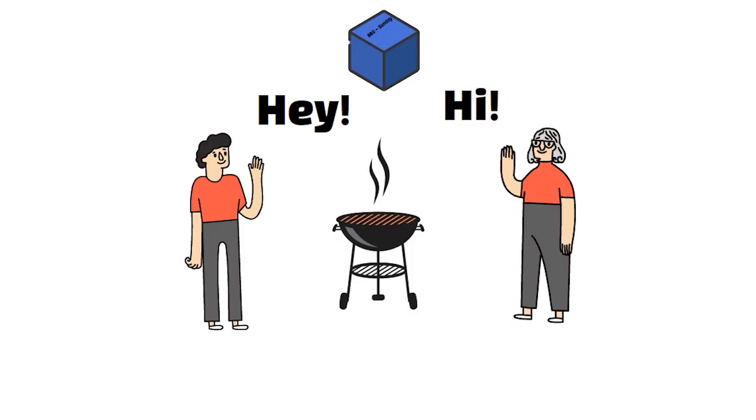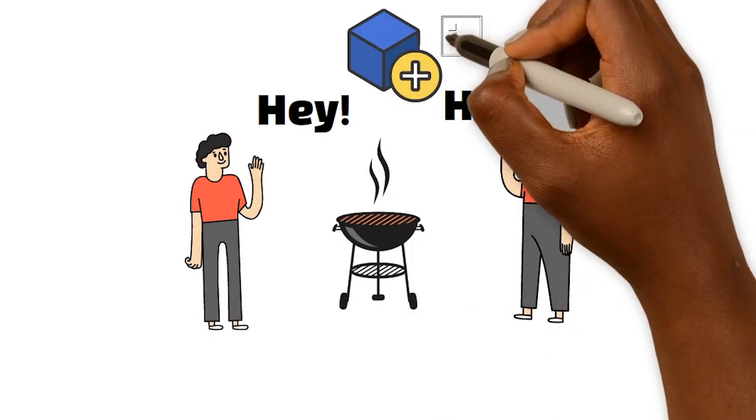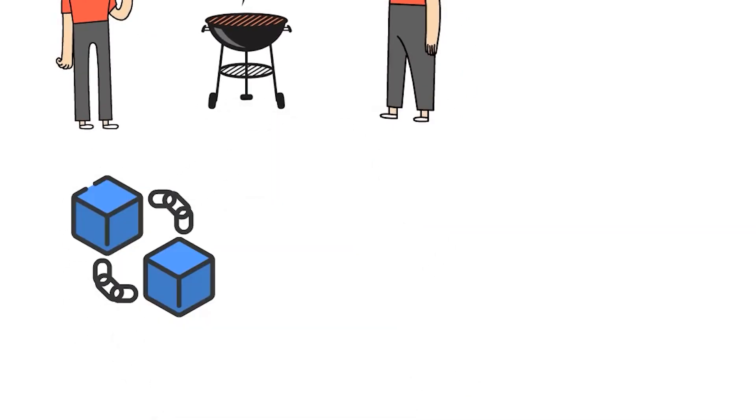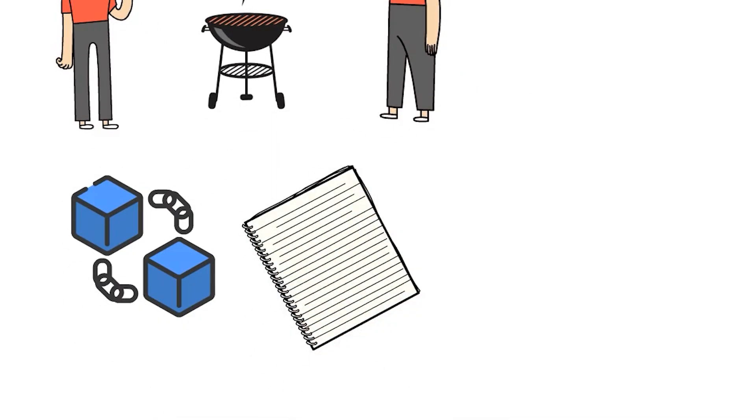Each block has an identifier called a hash, which makes it distinct from other blocks in the chain. So now that we have our first block set up with all the relevant information about our barbecue...